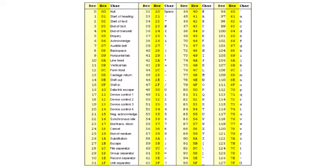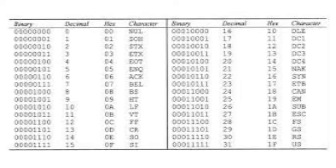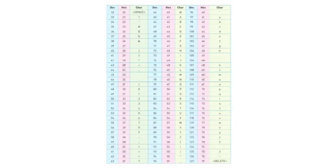These codes represent the letters, numbers, and characters found on a standard keyboard, together with 32 control codes that use codes 0 to 31 in denary, or 00 to 19 in hexadecimal. This table shows part of the standard ASCII Code table. Only the control codes have been removed.